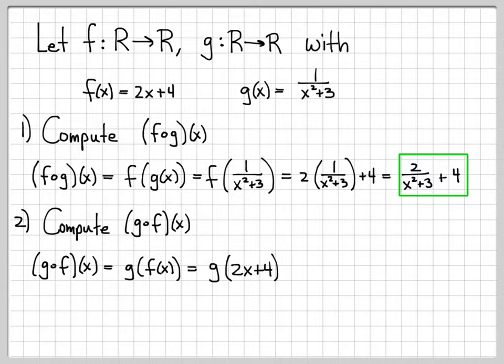So when I write down g evaluated at 2x plus 4, I'm going to write down 1 over x squared plus 3. But I'm going to replace the x with 2x plus 4. And I guess we could just leave it like that. I guess we could simplify it a little. Maybe we want to expand the square there.